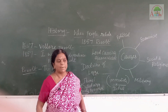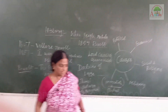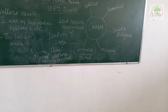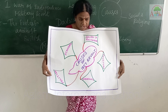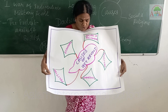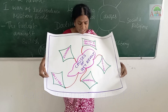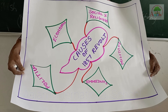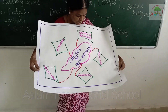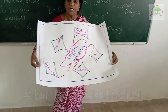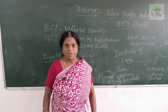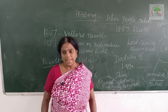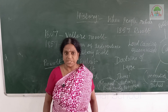Did you understand, children? The causes of the 1857 revolt are: political causes, military causes, economical causes, immediate cause, and social and religious causes. Hope you understand this session. Next week I will continue this.